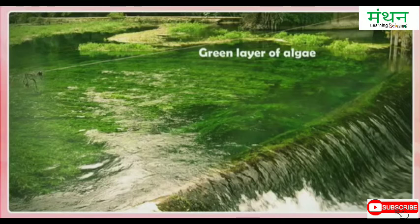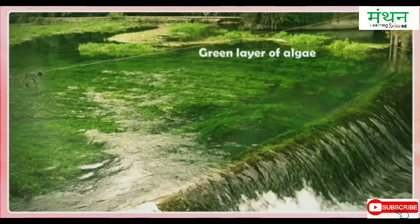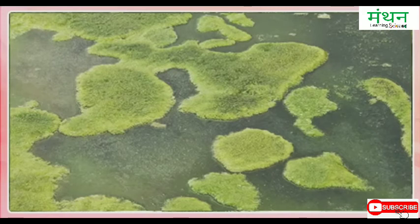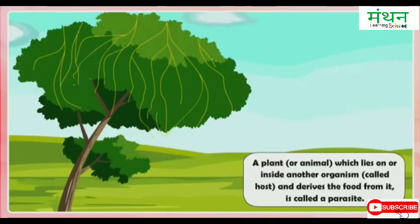Photosynthesis by algae. Many times we see patches of slimy green layer floating on the surface of a pond, lake, or stagnant parts of a river. Algae are a large group of simple plant-like organisms. Algae contain chlorophyll and produce food by photosynthesis just like plants, but differ from plants because they do not have proper roots, stems, and leaves.